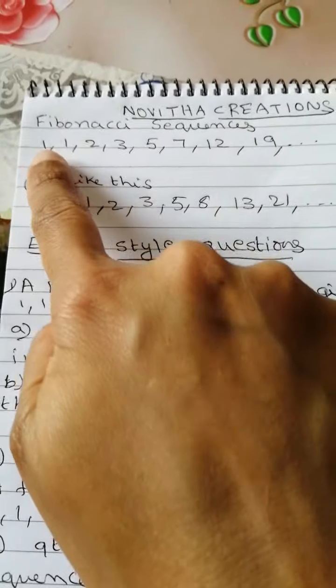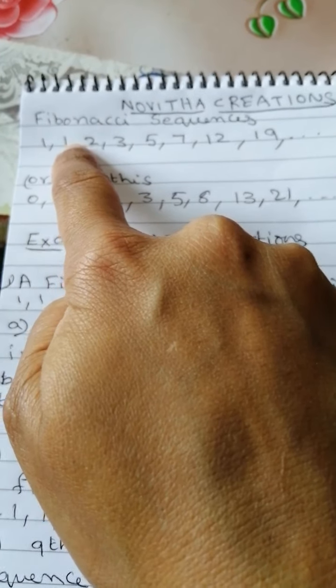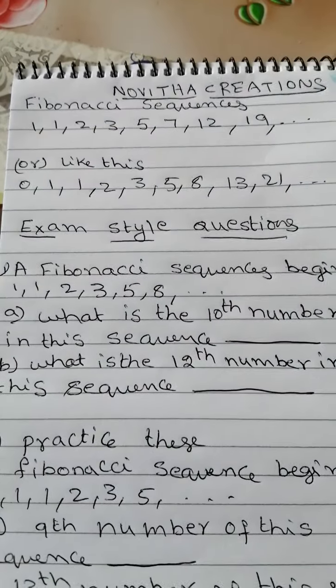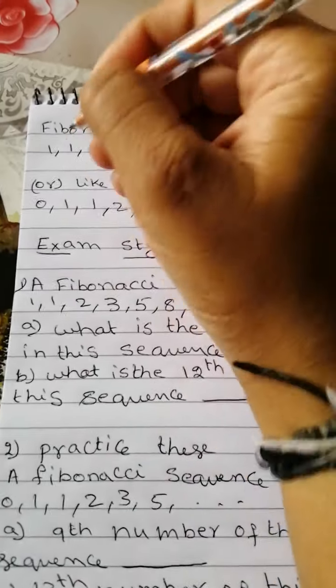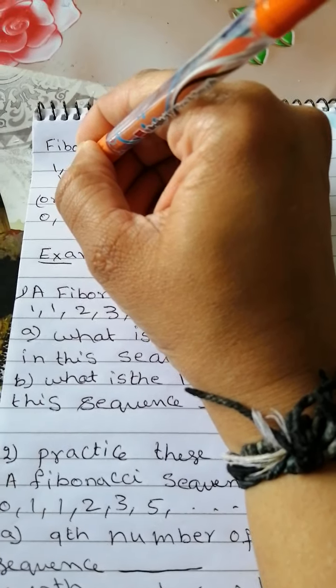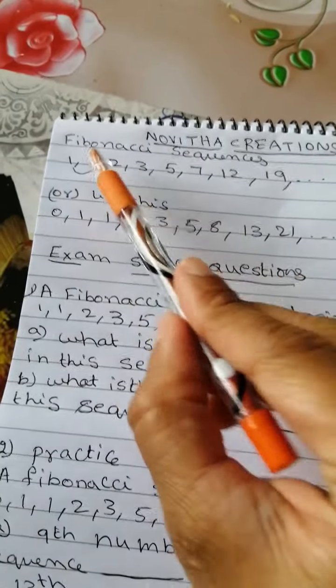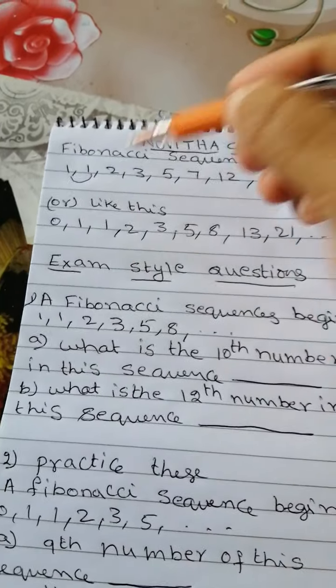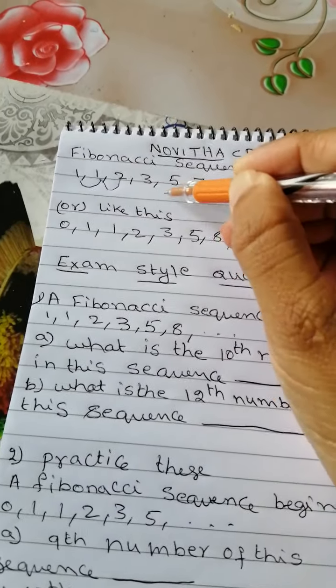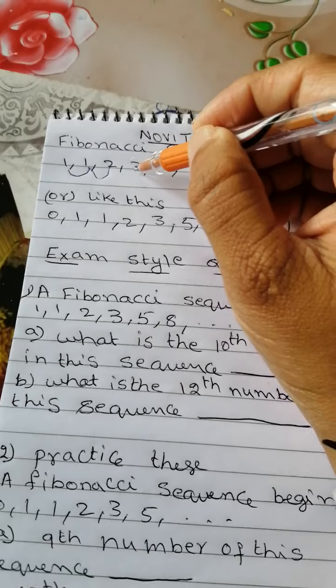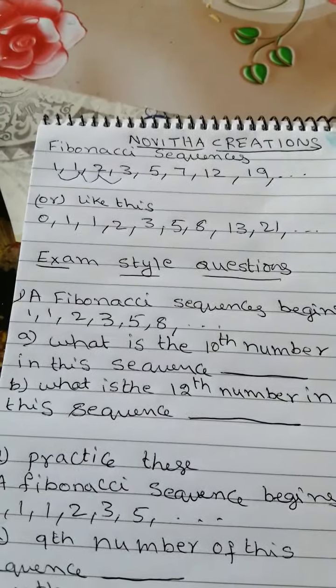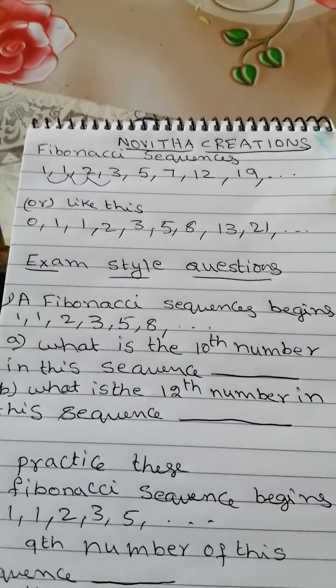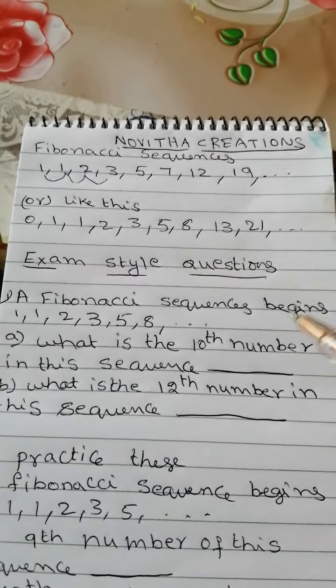In Fibonacci Sequences, the two previous numbers will make another number in the sequence. Here, if you see, 1 plus 1 makes 2, 1 plus 2 makes 3, 2 plus 3 makes 5. So the previous two terms will give you the next term in this sequence.